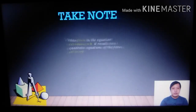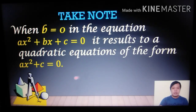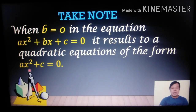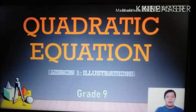Take note: when b = 0 in the equation ax² + bx + c = 0, it results in a quadratic equation of the form ax² + c = 0. That concludes the first part of this lesson on quadratic equations. Please watch the second part in the next video, and don't forget to subscribe. Thank you!